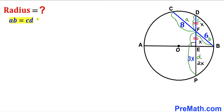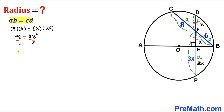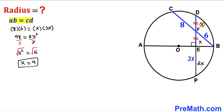Let's fill in the blanks of the intersecting chords formula: a is 8, b is 6, so 8 times 6 equals c times d, which is X times 3X. That gives us 48 equals 3X squared. Dividing both sides by 3, X squared equals 16. Taking the square root of both sides, X equals positive 4 units.